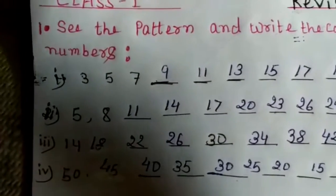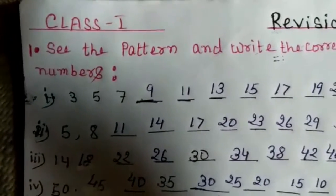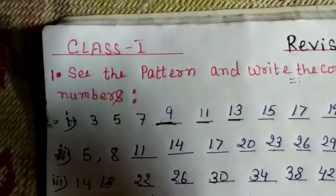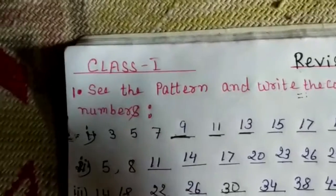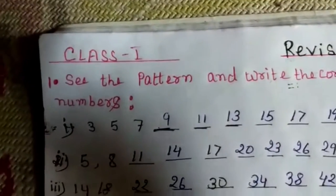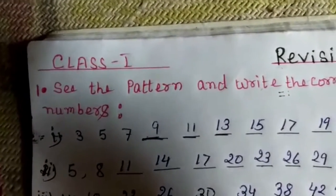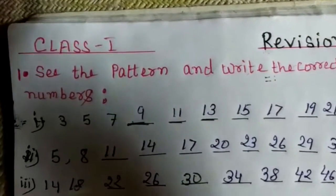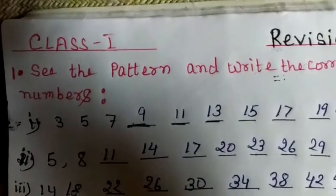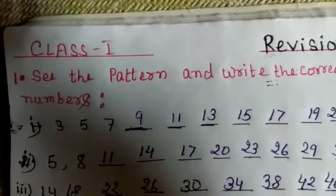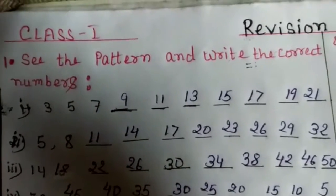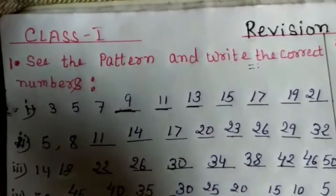The first question shows: 3, then 5, then 7, and after seven we need to fill the blanks. After 3, if we add 2 we get 5. In 5 we add 2, we get 7. In 7 we add 2, we get 9. In 9 we add 2 we get 11, then 13, then 15, then 17, then 19, then 21.